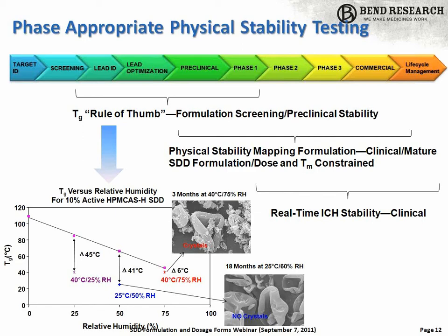This is the rule-of-thumb approach: you'd like to see at least 10, or better 20, degrees of separation between the Tg and the storage temperature and humidity of interest. As you get further in development, you set up real-time stability samples — and the idea is always to check those against your prediction and expectation rather than just hoping for the best. You can also do more kinetic predictions, particularly when you're in a gray region of around 10 degrees or so of separation between the Tg and the storage temperature, to understand the kinetics of crystallization better using other thermal methods.